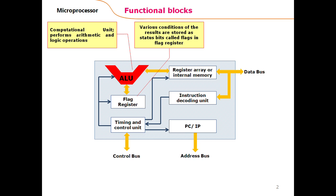There is a register normally called the flag register, and in later microprocessors it is called EFLAGS. This register contains various conditions of results, stored as bits called flags. Whenever arithmetic and logic operations are performed, the status after those operations is stored as flag bits in this register. There is also an array of registers or internal memory, and these registers vary in number and size from one microprocessor to another.